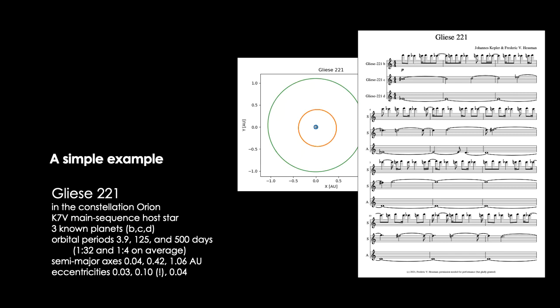Here's a very simple example of an exoplanetary system, Gliese 221. Here we have three planets, a planet very close to the central star at high frequencies, and two outer planets that are in a one to four resonance. This means that on average, these two planets produce a note which is three octaves apart.